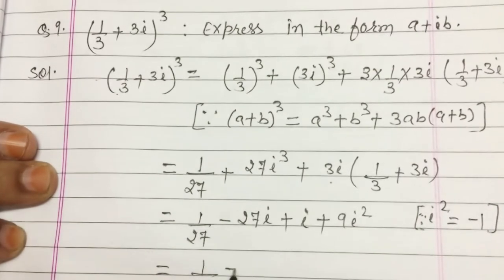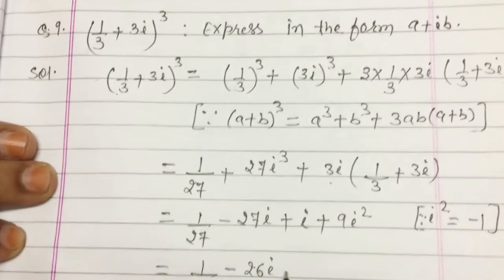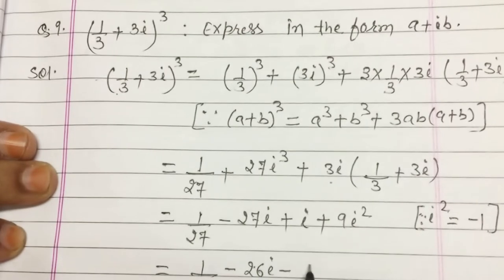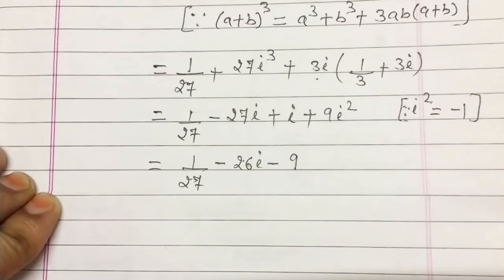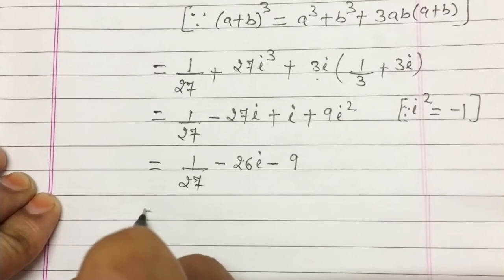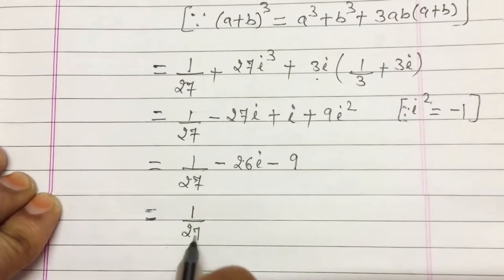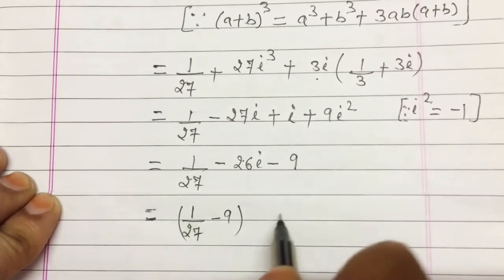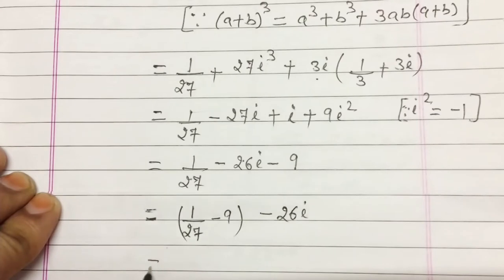So we have 1/27, then minus 26i — combining the imaginary terms — and then minus 9, since 9i² = −9.